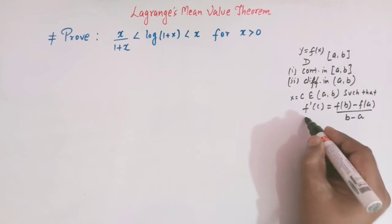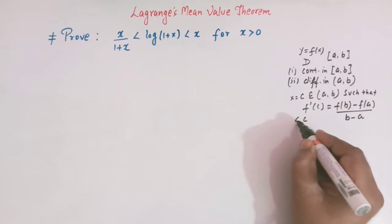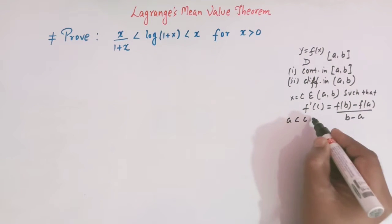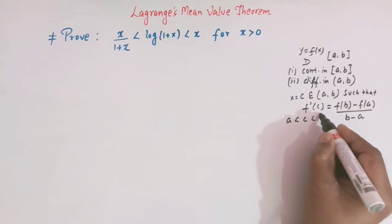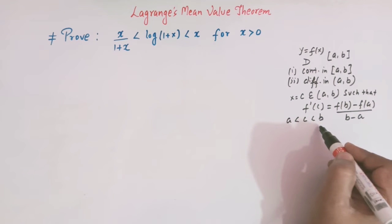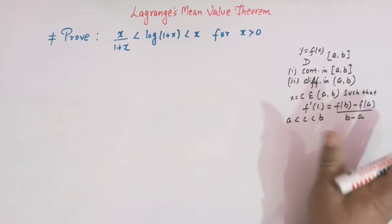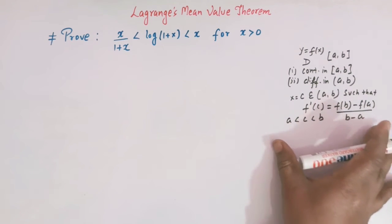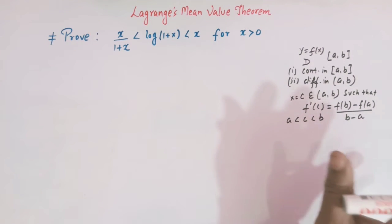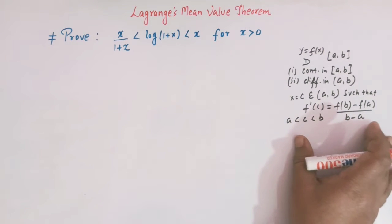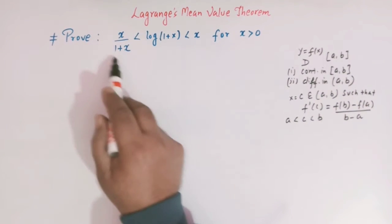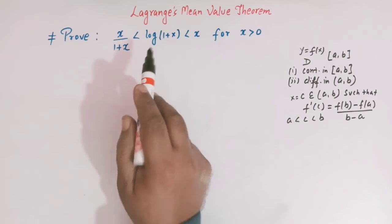Here c is such that it is greater than a but less than b — that is, c lies between a and b. This is the statement of Lagrange's mean value theorem, and this statement will be used to prove this inequality.